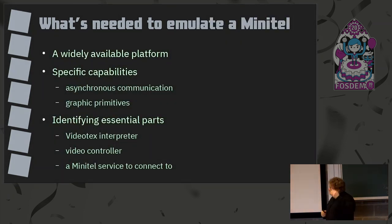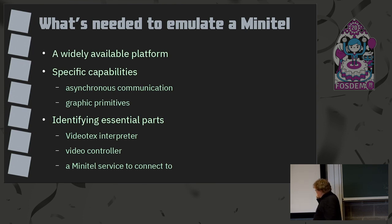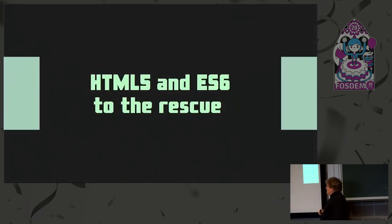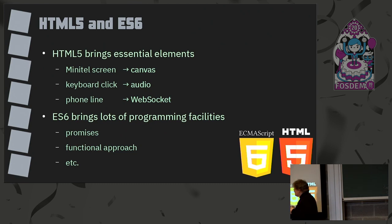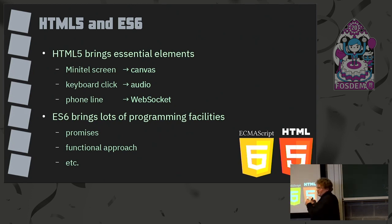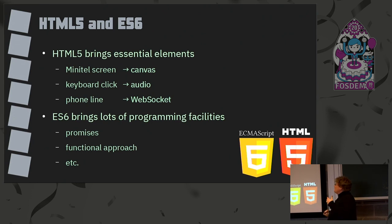What's needed to emulate Minitel? A widely available platform with specific capabilities: it must be able to do asynchronous communication and have graphic primitives. The emulator is divided into three parts: the video interpreter, the video controller, and a Minitel service to connect to. With HTML5 and ES6 all we need is there: we can draw the Minitel screen with Canvas, do keyboard clicks with audio, and the key capability is WebSocket, which enables full-duplex communication. ES6 also brings programming facilities like promises and a functional approach.